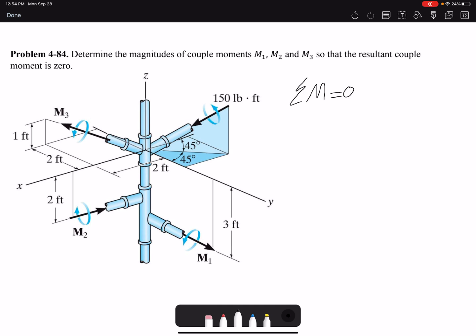We have one moment here, one moment here, another moment, and 150 pound-foot. So we have three unknowns, but we know that in 3D we can write summation of moment in x, y, and z coordinates, and then we'll get three equations.